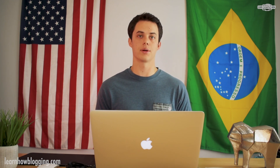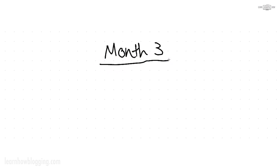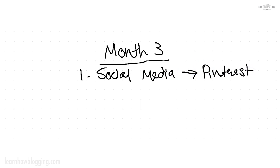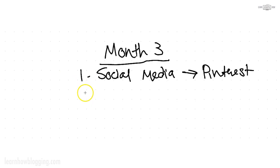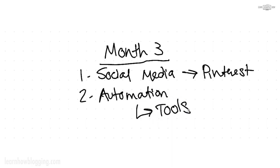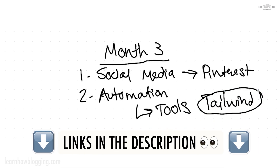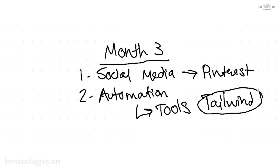Month number three is all about getting social media set up. You're going to want to make sure you have your social media accounts all up and ready to go, especially Pinterest. Pinterest is the number one traffic source for a lot of bloggers today, so I highly recommend it depending on your blog niche — especially if your audience includes women. When you get your Pinterest account set up, I highly recommend looking into automation tools. I highly recommend Tailwind — there's a link below this video, and you can get a month of it free. It makes pinning on Pinterest a whole lot easier and more effective.